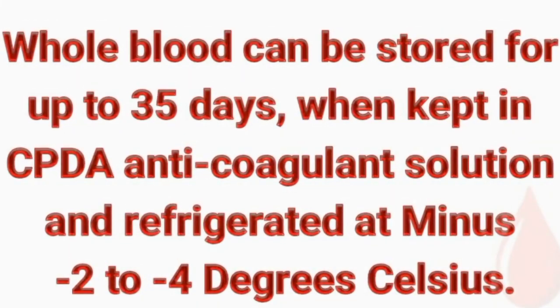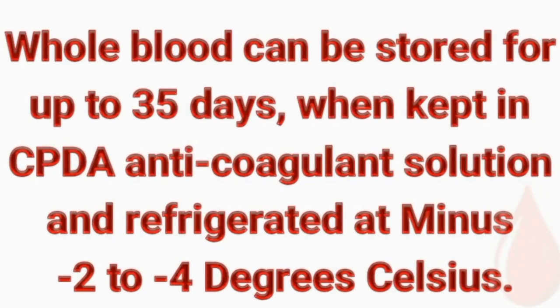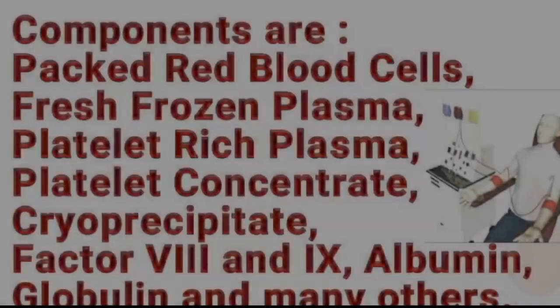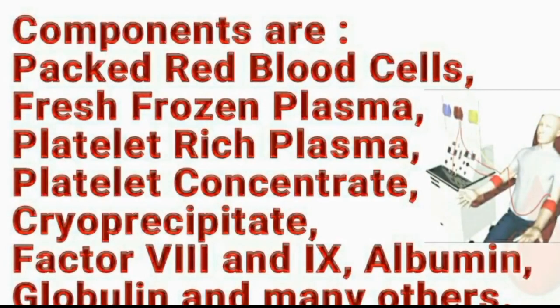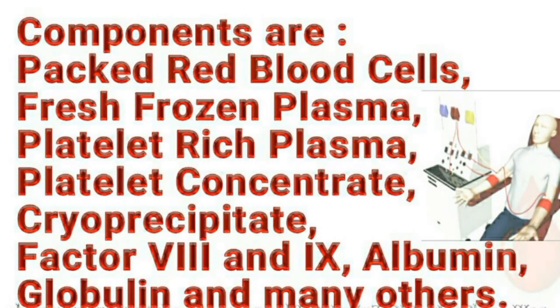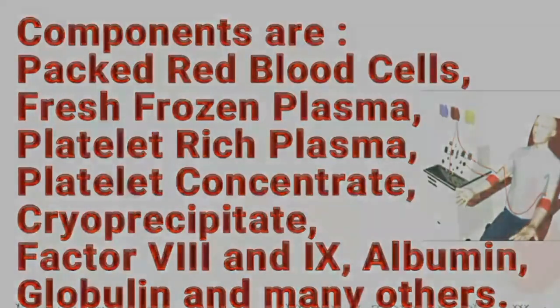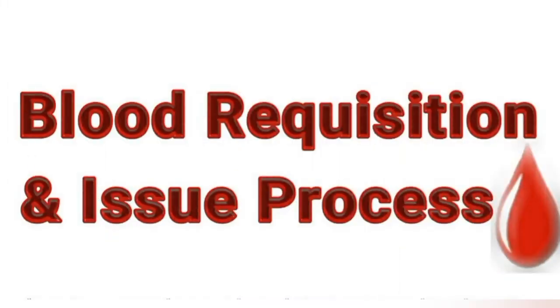Whole blood can be stored for up to 35 days when kept in CPDA anticoagulant solution and refrigerated at minus 2 to minus 4 degrees Celsius. Blood will be separated into components within 8 hours of donation. These components are packed red blood cells, fresh frozen plasma, platelet-rich plasma, platelet concentrate, cryoprecipitate, factor VIII and IX, albumin, globulin, and many others.